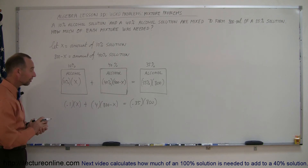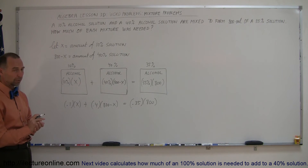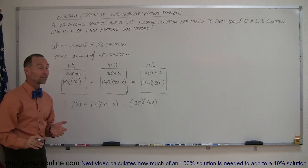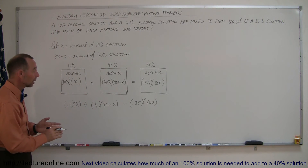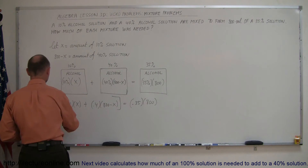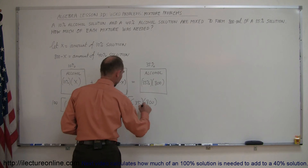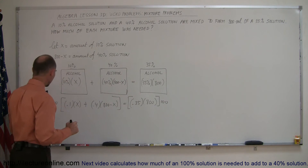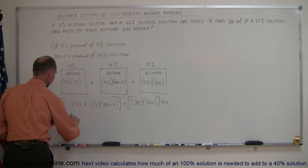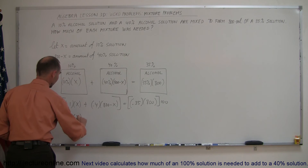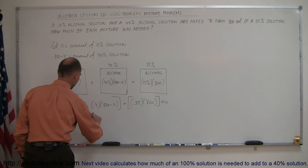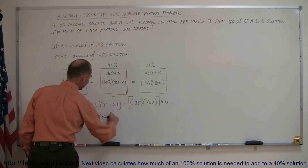Now we solve for x. First, get rid of decimal places — there's one decimal place in 0.1, one in 0.4, and two in 0.35 — so we multiply both sides by 100. That gives us 10x + 40(800 − x) = 35 × 800.